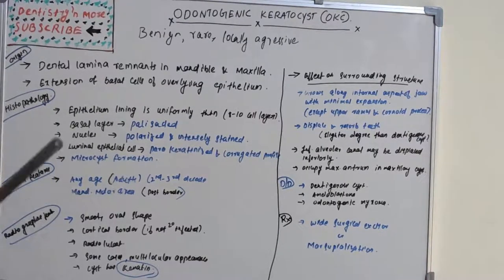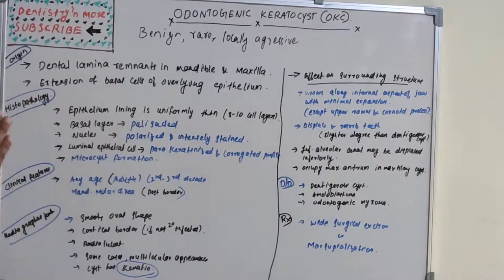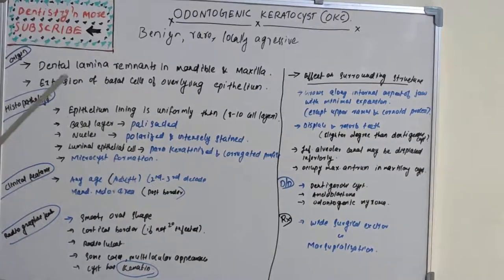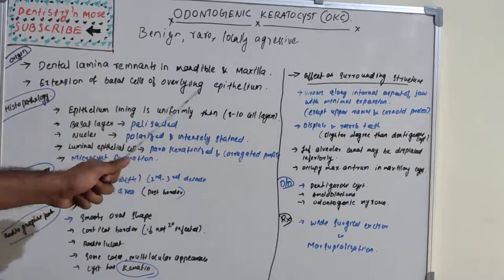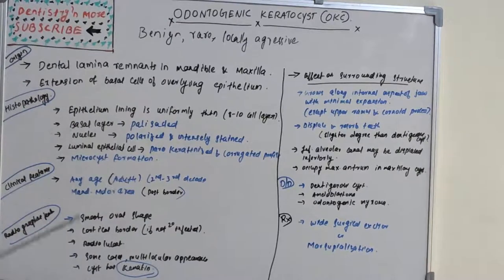In histopathology, the epithelial lining is uniformly thin — about eight to ten cell layers. The basal layer has palisaded, polarized, and intensely stained nuclei. Luminal cells have a parakeratinized and corrugated profile, and there will be microcyst formation. Key histopathologic features: uniform epithelial lining, palisaded basal layer with polarized highly stained nuclei, parakeratinized corrugated luminal epithelial cells, and microcyst formation.